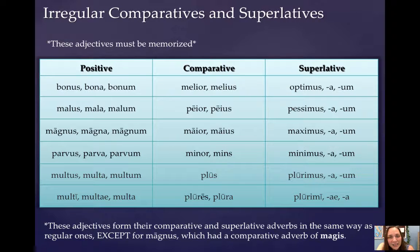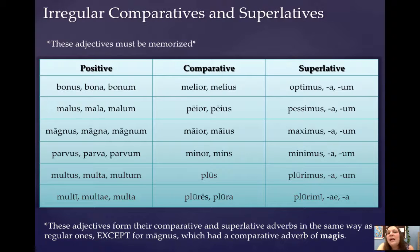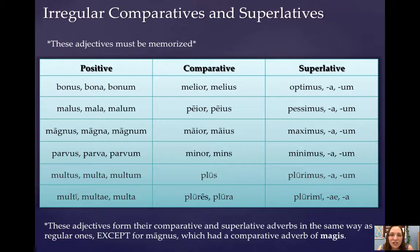Really there aren't that many of these adjectives to be memorized. The most common ones are bonus, malus, magnus, parvus, and multus, which does its own little special thing. In some ways, at least the first two — bonus and malus — are irregular in English too. Bonus, bona, bonum means good, and in English the comparative of that is not 'gooder,' it's 'better.' The superlative of good is not 'goodest,' it's 'best.' So these two are somewhat analogous for us as English language speakers because we can see how irregular the comparative and superlative of bonus and malus are in English as well.